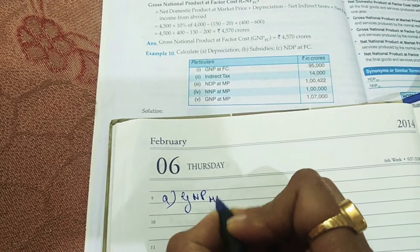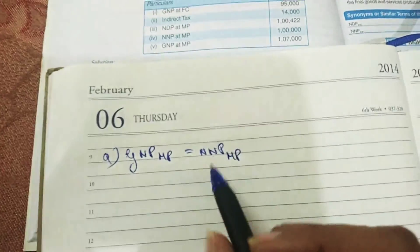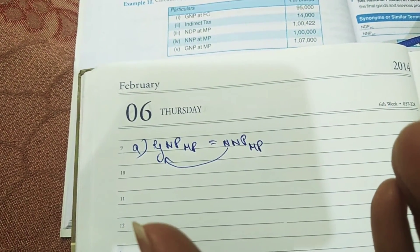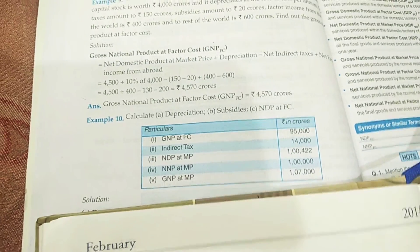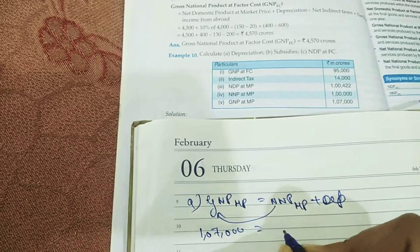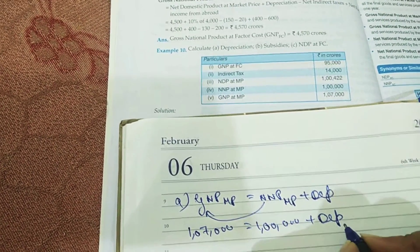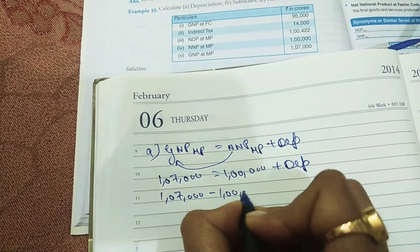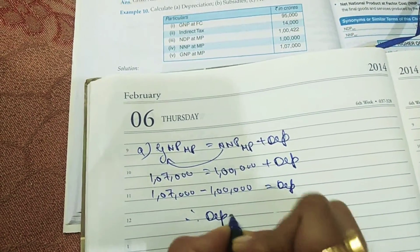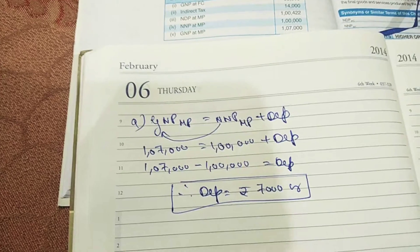We write: GNP at MP = NNP at MP + Depreciation. Net is smaller and gross is bigger, so to convert net to gross we add depreciation. GNP at MP is 1,07,000 = NNP at MP 1,00,000 + Depreciation. Therefore, Depreciation = 1,07,000 − 1,00,000 = ₹7,000 crore.